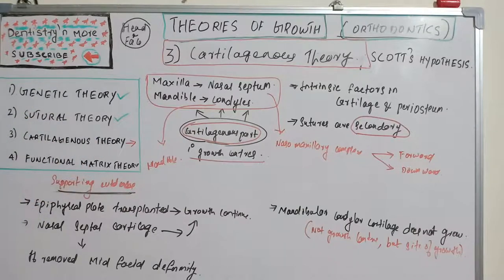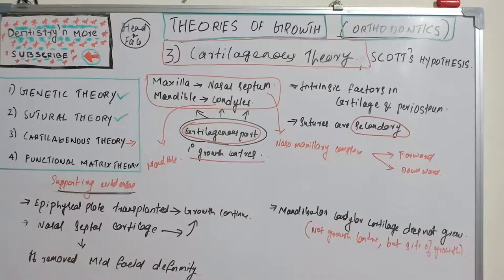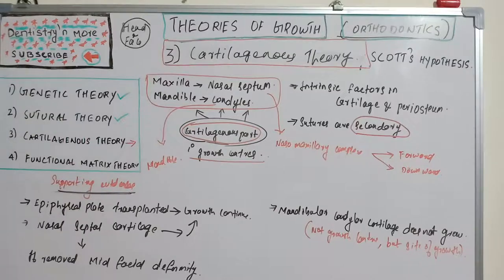One problem with mandibular condylar cartilage is that it could not continue growth when transplanted to a different site, suggesting it is a growth center but not an independent site of growth. Despite this shortcoming, the mandibular condyle still acts as a growth site. The key point of this theory is the emphasis on cartilage as the primary driver of craniofacial growth.